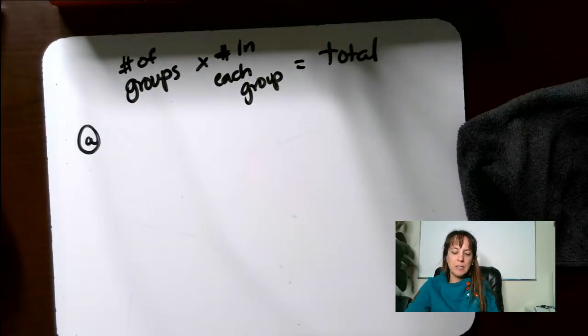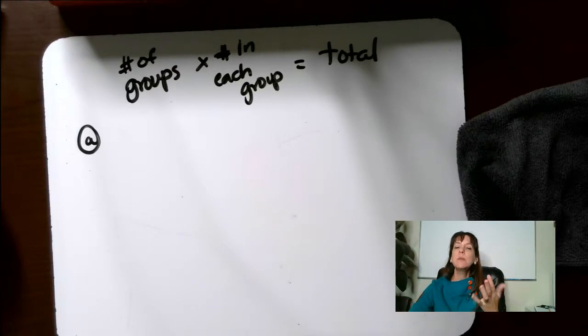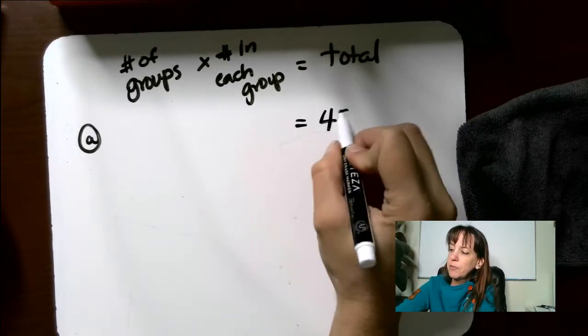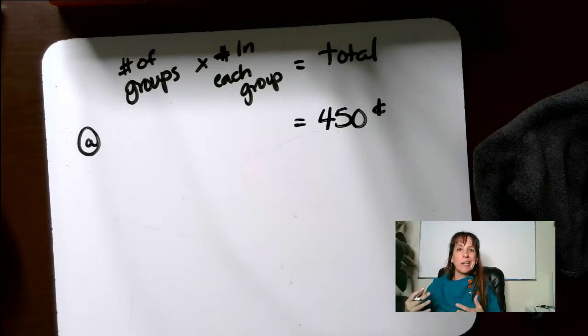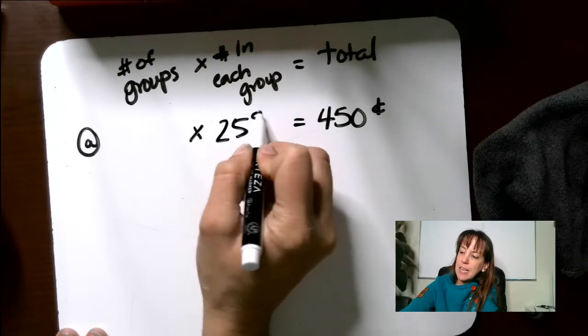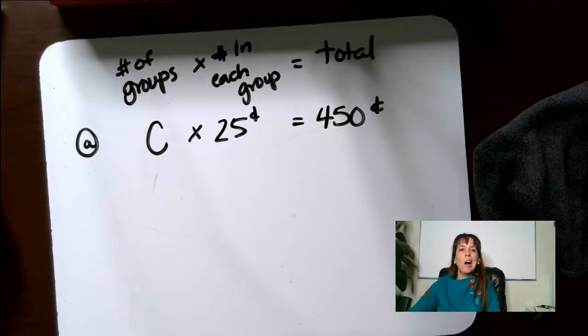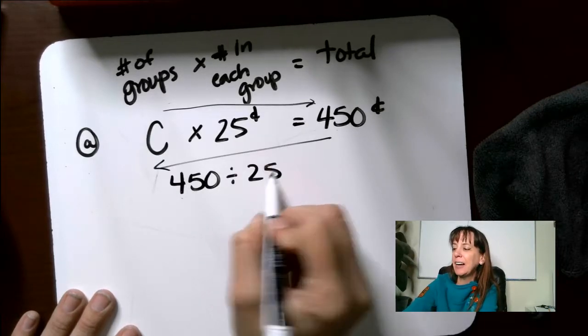Marcy collected $4.50 selling lemonade at 25 cents each cup. How many cups of lemonade did Marcy sell? The hint says record $4.50 as 450 cents. This is a really good point because for this problem, you need to make sure you're talking about the same things. Are we talking about dollars or cents? She collected a total of 450 cents. Each cup of lemonade, each is usually an indication you want to use multiplication, is 25 cents. So each one is 25 cents. Number of groups or the number of cups of lemonade, I'll use C for cups.